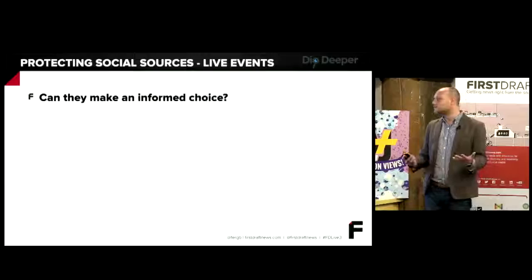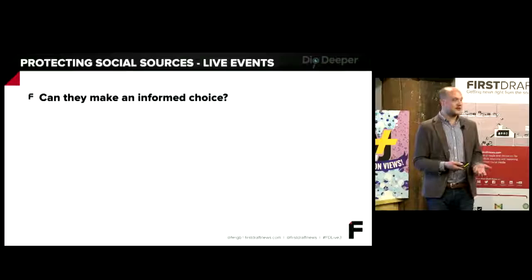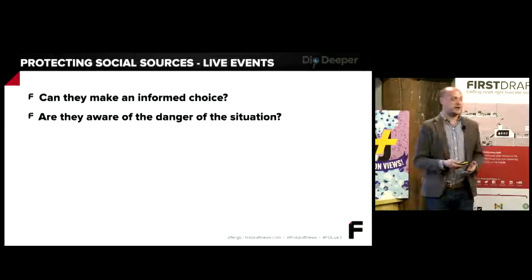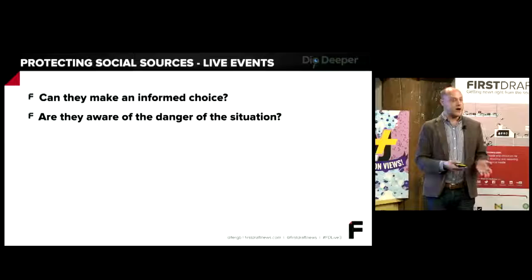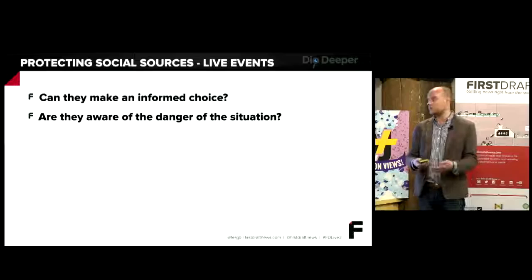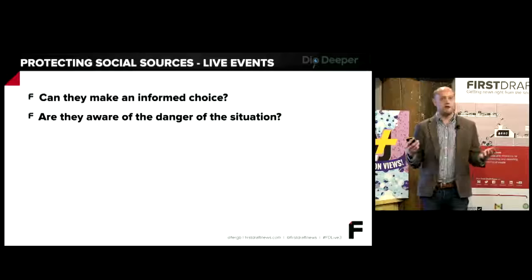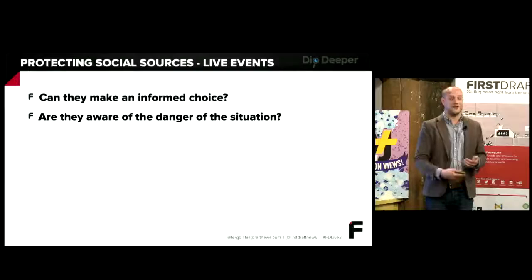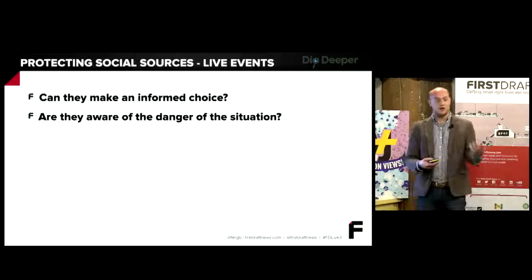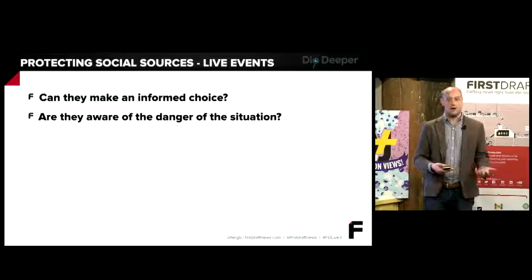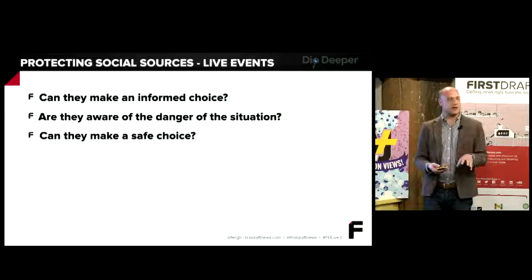First of all, protecting social sources for live, real-time, ongoing events. What do I mean here? When we're communicating with individuals, can they make an informed choice? Are they in a position to make an informed choice? Are they aware of the dangers of the situation? I'm sure everyone can think of recent examples where there has been a dangerous situation and someone has got something that you want.